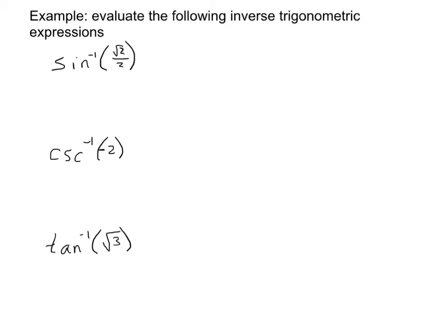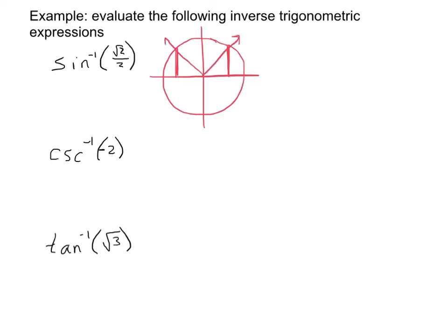Here are three examples to work out on your own — pause the video and try them. The first one: the inverse sine of √2/2. Looking at the unit circle, I need a y-value of √2/2, which is the middle height. That's going to be both in the first and second quadrants, but principal values for sine, cosecant, and tangent are in the first and fourth quadrants. So the answer is π/4.